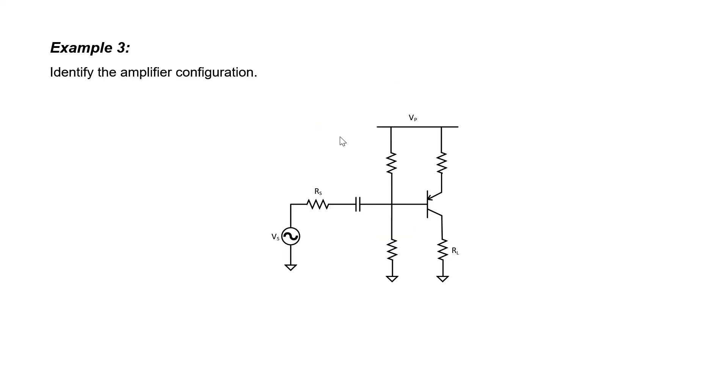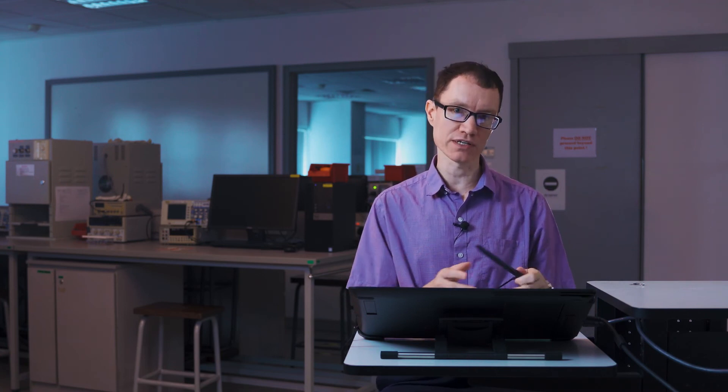In this example, I have a PNP transistor rather than an NPN transistor. In circuits, PNP transistors are not used nearly as often as NPN transistors — they're simply not as good. The reason relates to the mobility of holes versus the mobility of electrons, which is a material property of silicon, resulting in less desirable transistor properties overall. So if you can get away with using an NPN transistor, you should always choose it over a PNP. Our load resistor is attached to the collector — and I know it's the collector because the emitter is always identified by the arrow. The signal enters the base and exits through the collector, so this is a common emitter configuration.